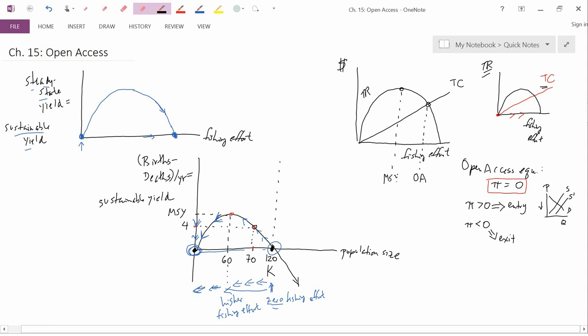So I'll label this MSY for maximum sustainable yield. Now, this is actually the maximum sustainable yield level of effort. It's not the maximum sustainable yield itself. The maximum sustainable yield itself is the number of fish. And we don't have fish on this axis. The only place here, well, we have fish here on this axis, this is the steady state yield. And we have fish here, births minus deaths per year. So in those diagrams, we have fish, but in the diagram we have, with total revenue and total cost, we don't have fish. So I can't label maximum sustainable yield itself. But this is the maximum sustainable yield level of effort.